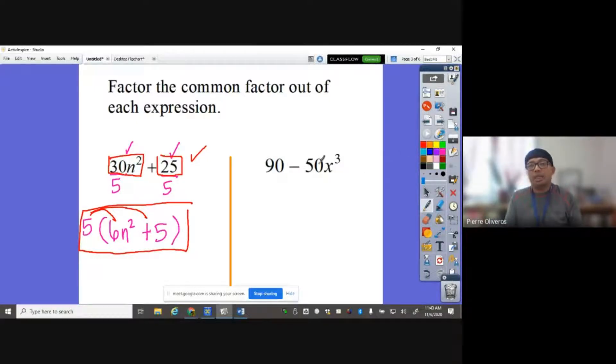90 minus 50x to the third power, what is their common factor? The common factor here is 10. 90 and 50, the common factor is 10. Do both of them have x, a variable x? No, only the second term. So the GCF here is only 10. So what do we write inside the parentheses? We need to divide each term by the GCF. 90 divided by 10 is 9, minus 50 divided by 10 is 5. There's no x in our GCF, so drop the x cubed. And that's the answer.